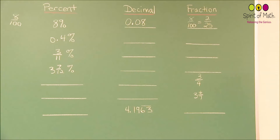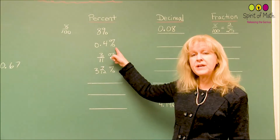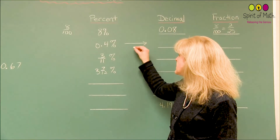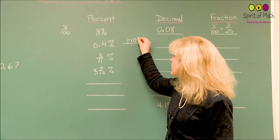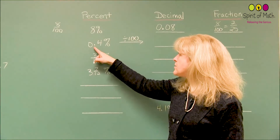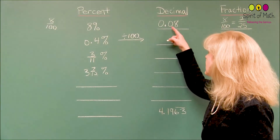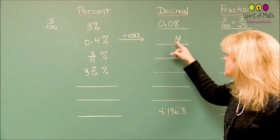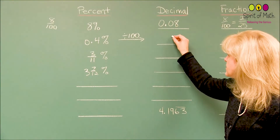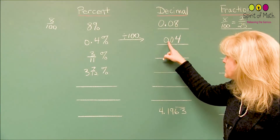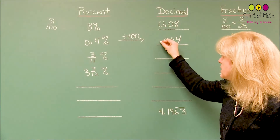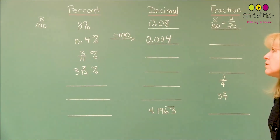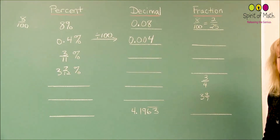When you've got 0.4 percent, it's basically the same thing. You're going to divide by 100, so when you're converting to a decimal, you always divide by 100. And when you divide by 100, that decimal place moves over to the left two places. But because it started here, you need to add two zeros so it can move two places — one, two — and 0.4 divided by 100 is 0.004. And that's your decimal form.